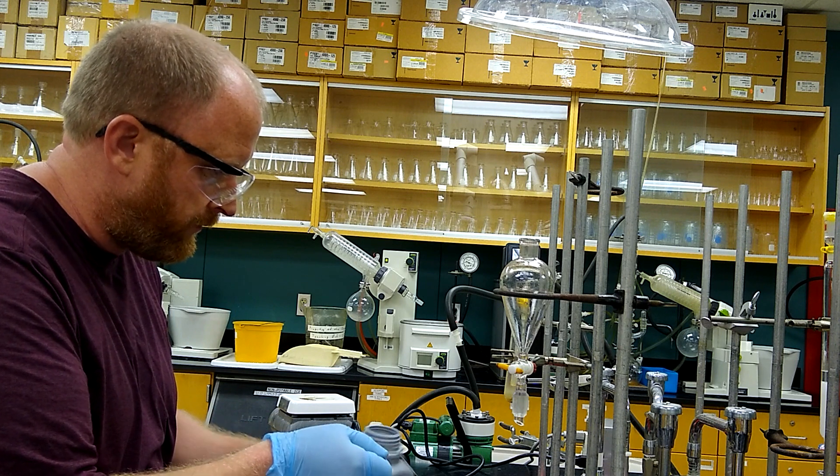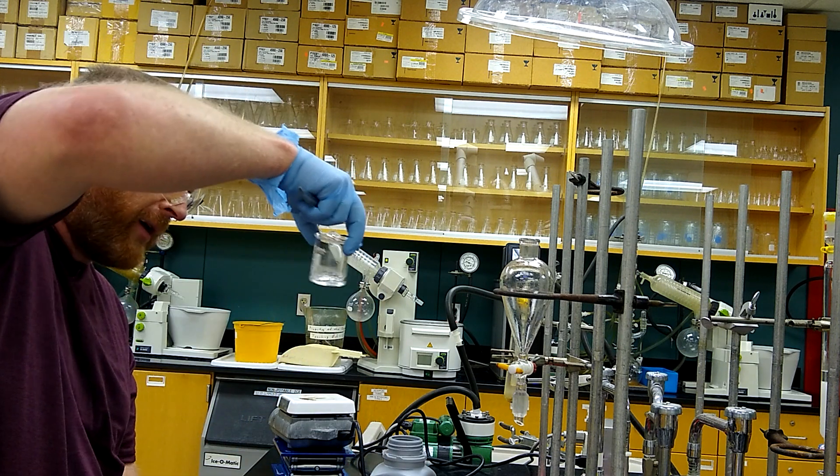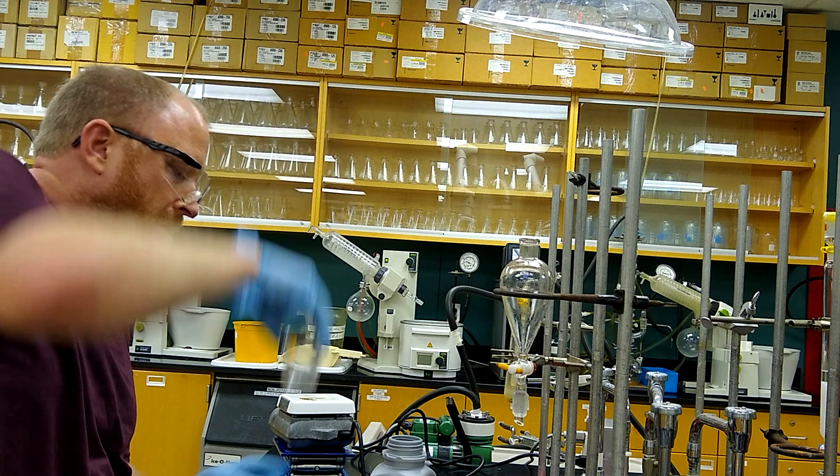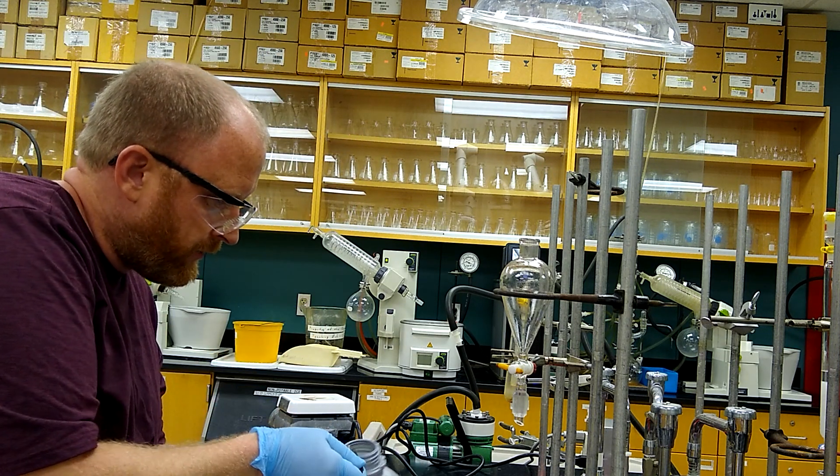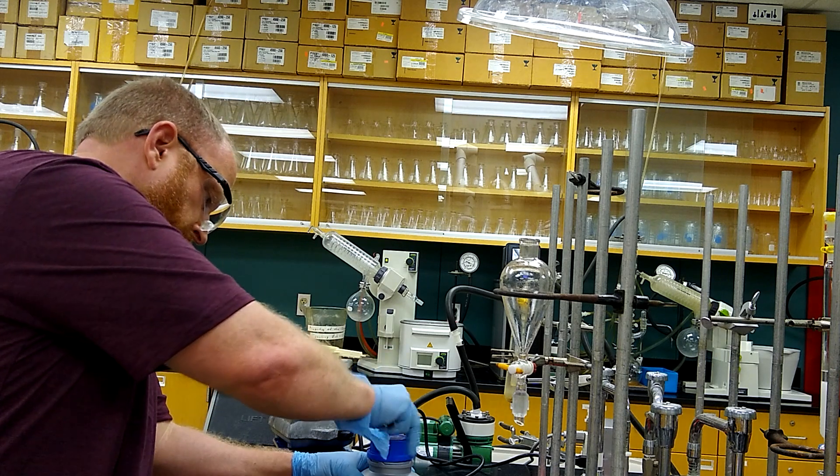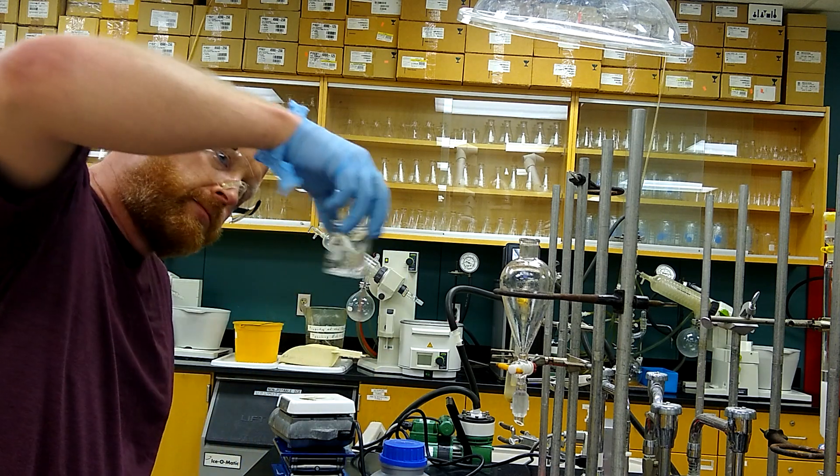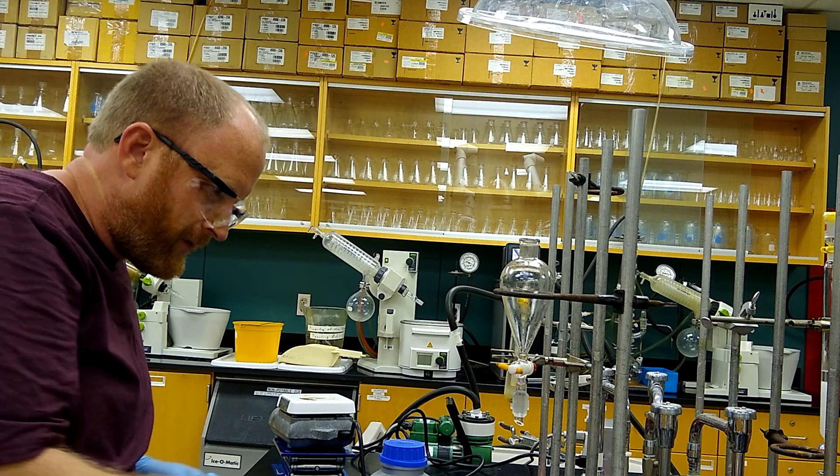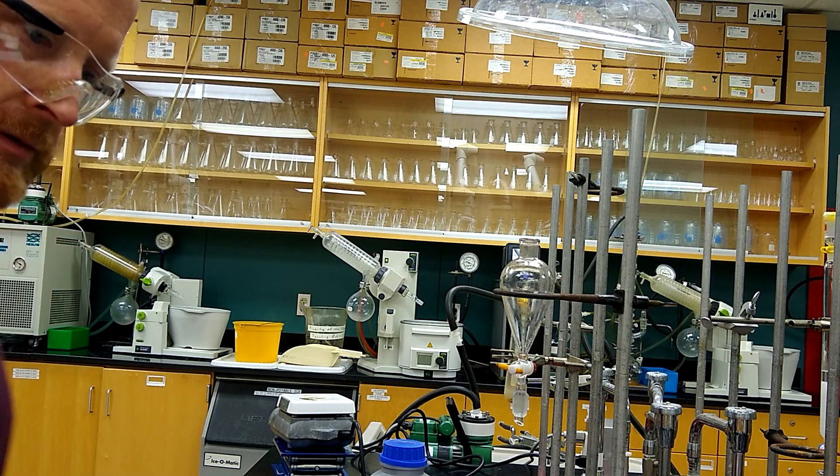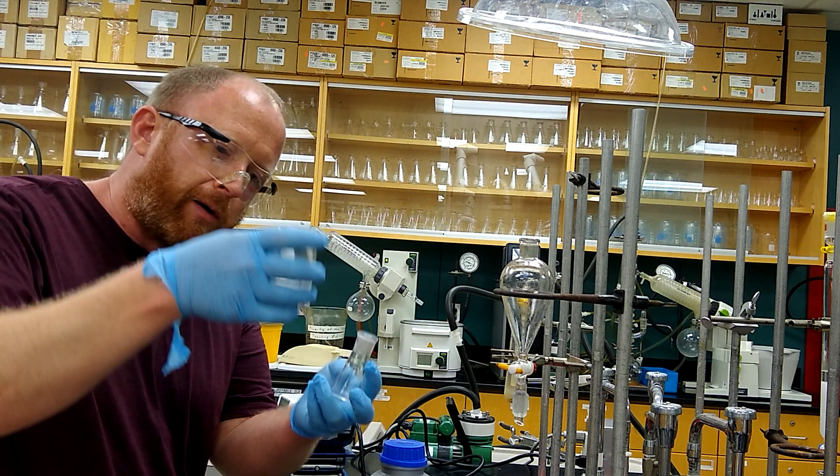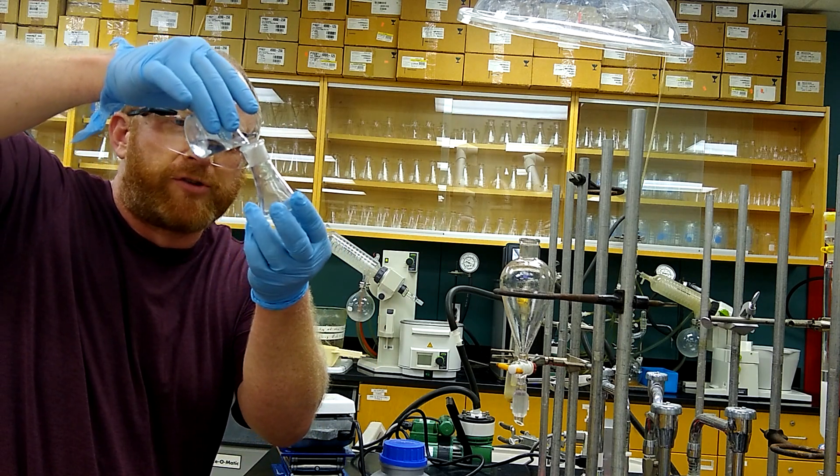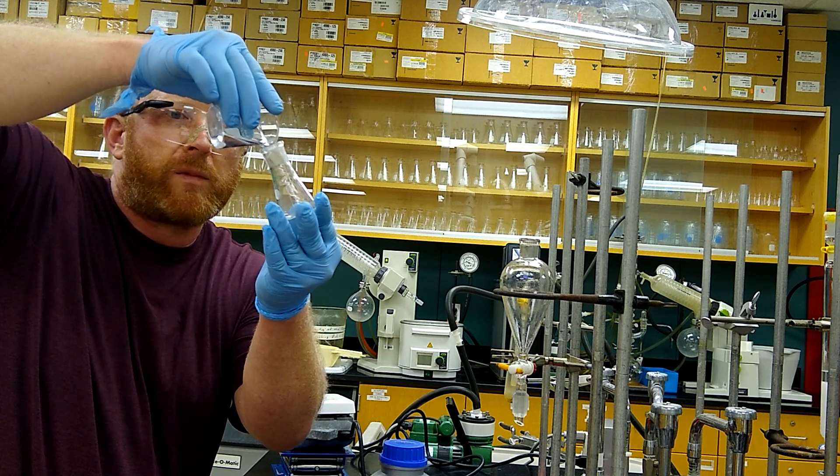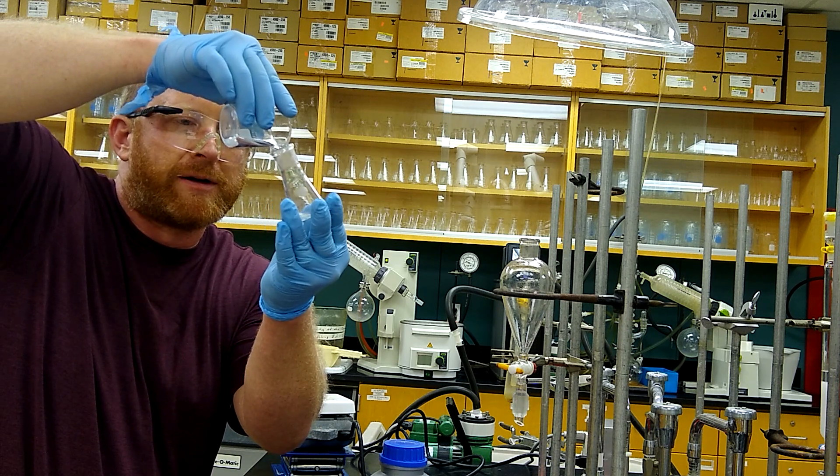I'm adding some calcium chloride until I'm not really seeing any clumping going on. I think that's probably sufficient here. Now I'm just going to decant, getting as much of that ether over as I can without getting the drying agent into my flask. We'll call that good; we don't need it to be perfect.